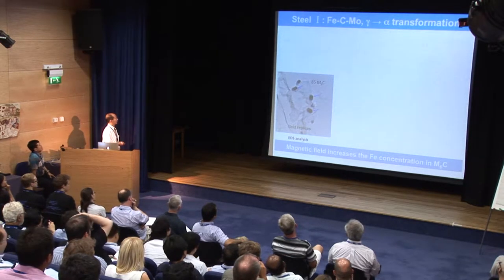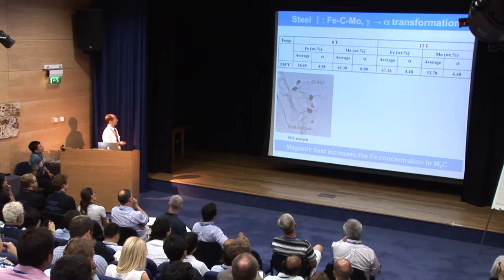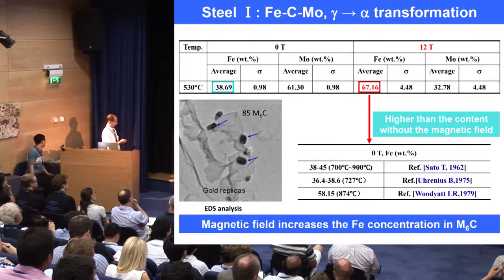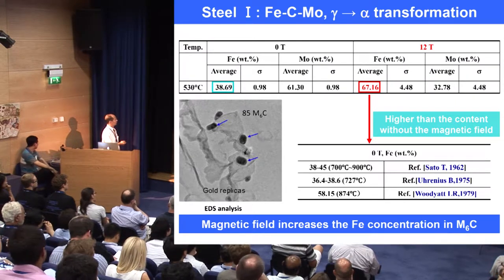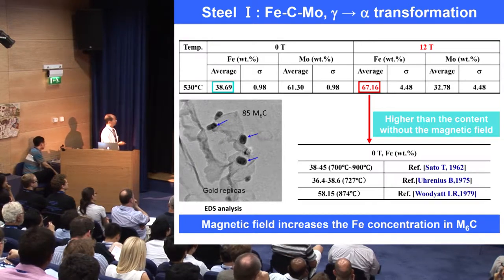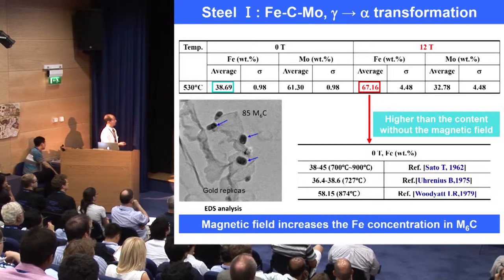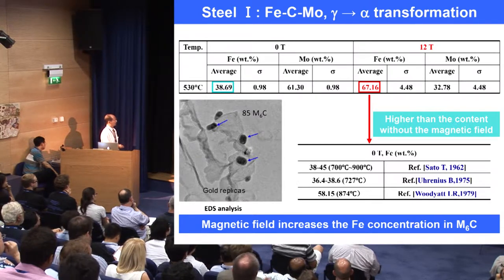Regarding the concentration of austenoid carbides, in the case of conventional heat treatment, we can see that the concentration of iron atoms remains at a low level. When the high magnetic field is applied, the iron concentration is remarkably increased compared to the conventional heat treatment and the literature values.